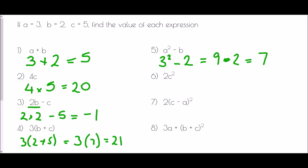Question 6 has a combination of multiplication and indices. This means 2 times c squared, which is 2 times 5 squared. We must remember that in BIDMAS, indices always come first. So we do 5 squared first, which is 25, then 2 times 25 is 50.